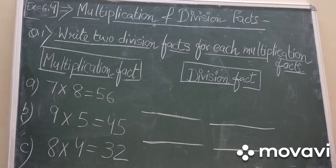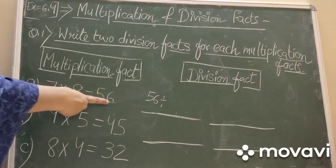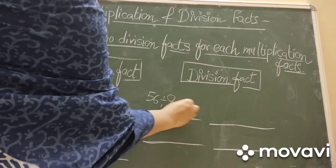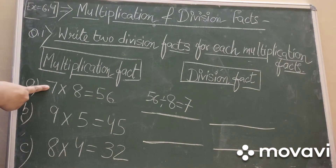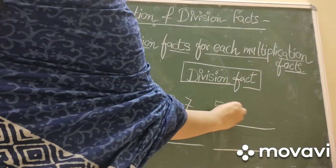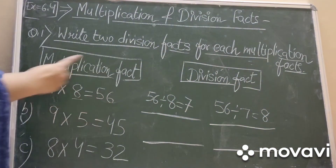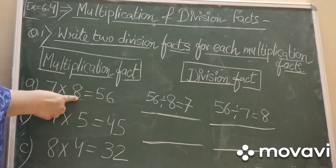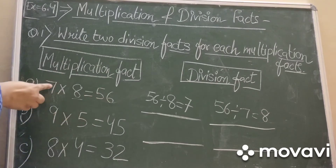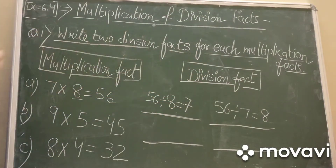Question number 1: write two division facts for each multiplication fact. Part A: 7 into 8 is 56. The first division fact is 56 divided by 8 equals 7, and the second is 56 divided by 7 equals 8. Hum yehi teeno numbers use karne wale hai — 56 divided by 8 is 7 and 56 divided by 7 is 8.